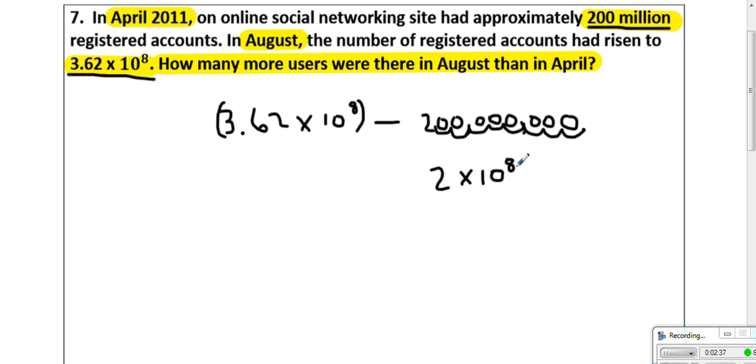I'm going to put my parentheses around there. This is 3.62 times 10 to the 8th minus 2 times 10 to the 8th. You realize that 3.62 minus 2 can be done now without any more work because both the exponents are the same. So it's 3.62 minus 2, and you get 1.62 times 10 to the 8th.